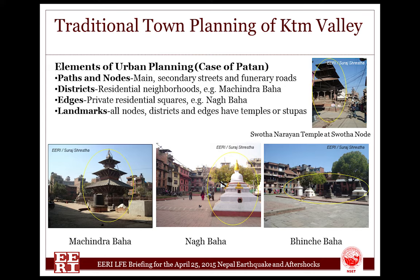The funerary route lacked any nodal points like any other routes. The neighborhood squares form the district of the town. Interestingly, each node, district, and area has temples and stupas, as shown in the picture of Machindra Ba, Nag Ba, Pinche Ba, and the Swatha Narayan Temple at Swatha node.